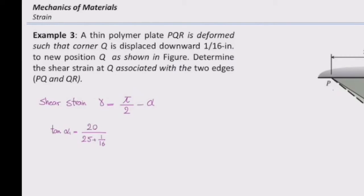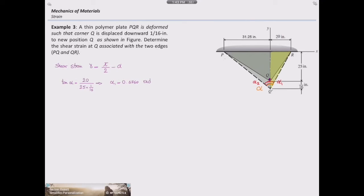That would be 20 divided by 25 and 1/16. The reverse of tangent here gives me alpha, so alpha 1 would be 0.6760 radian.